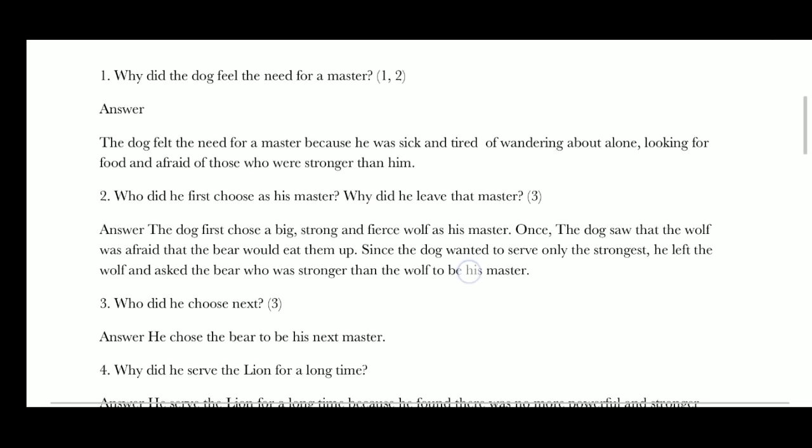Who did the dog first choose as his master? Why did he leave that master? The dog first chose a big, strong, fierce wolf as his master. Once the dog saw that the wolf was afraid the bear would eat them up. Since the dog wanted to serve only the strongest, he left the wolf and asked the bear, who was stronger than the wolf, to be his master.